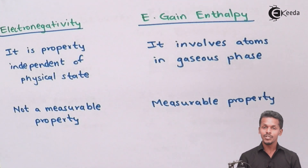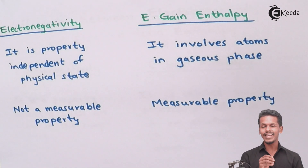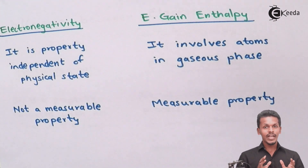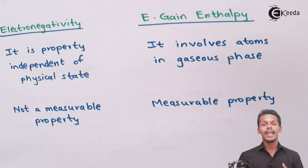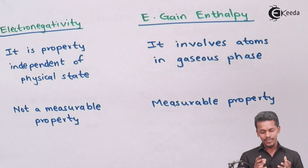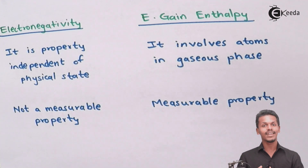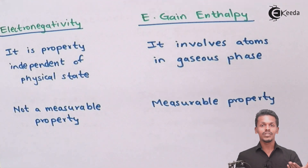For example, when we are estimating the electronegativity of the chlorine atom, we do not mention whether it is in the gaseous state or in a solid phase. Electronegativity is simply a tendency to attract electrons and has no relationship with physical state. But for electron gain enthalpy, it is clearly specified that the electron must be accepted by a gaseous atom — solid or liquid phase is not applicable — so it specifically requires a gaseous phase.